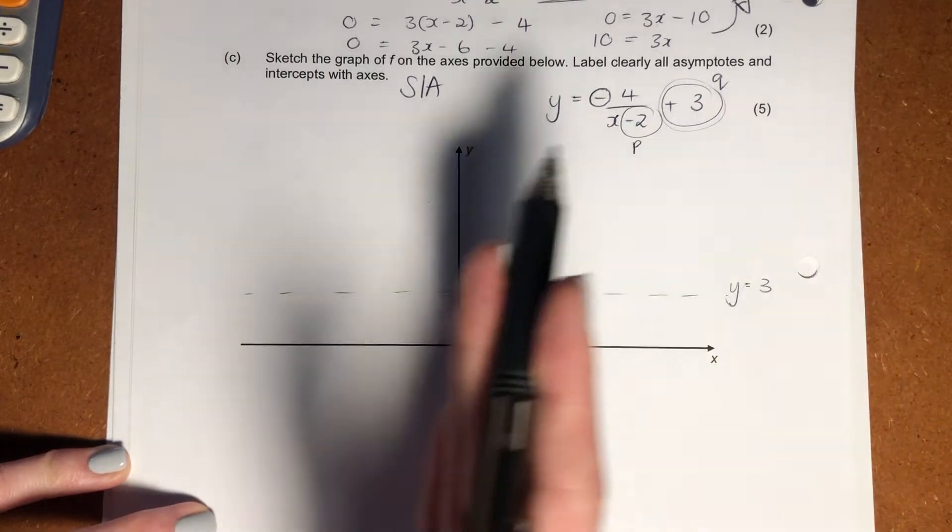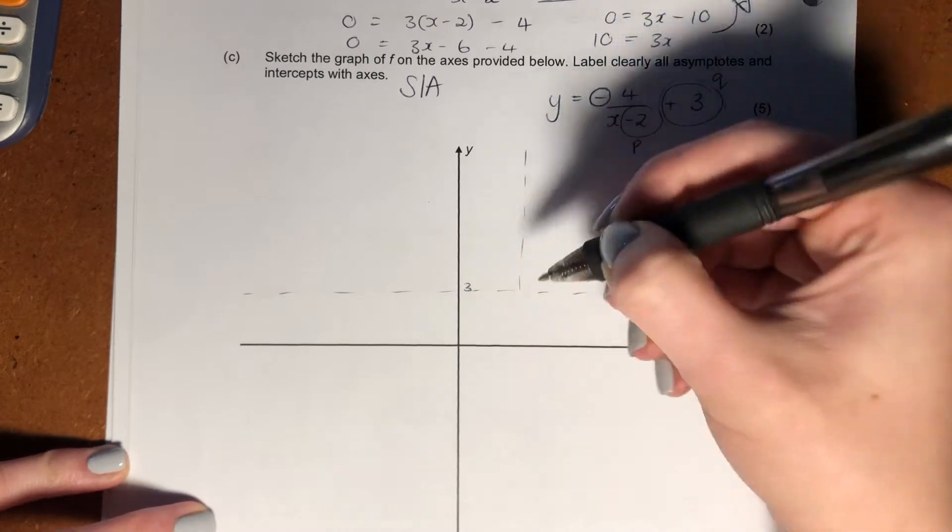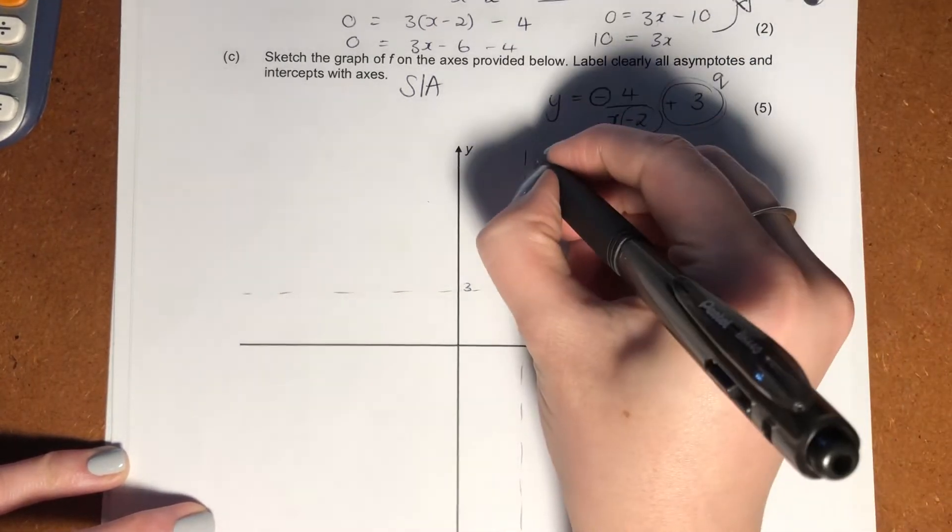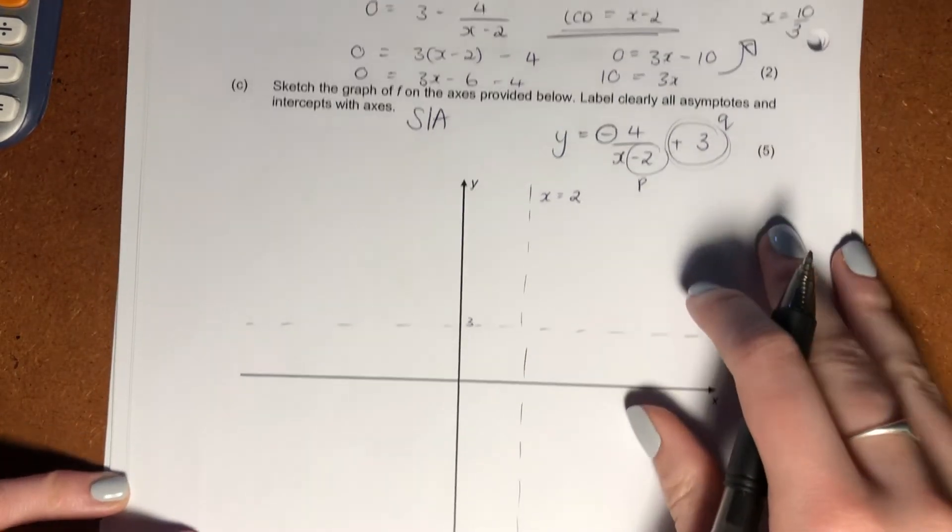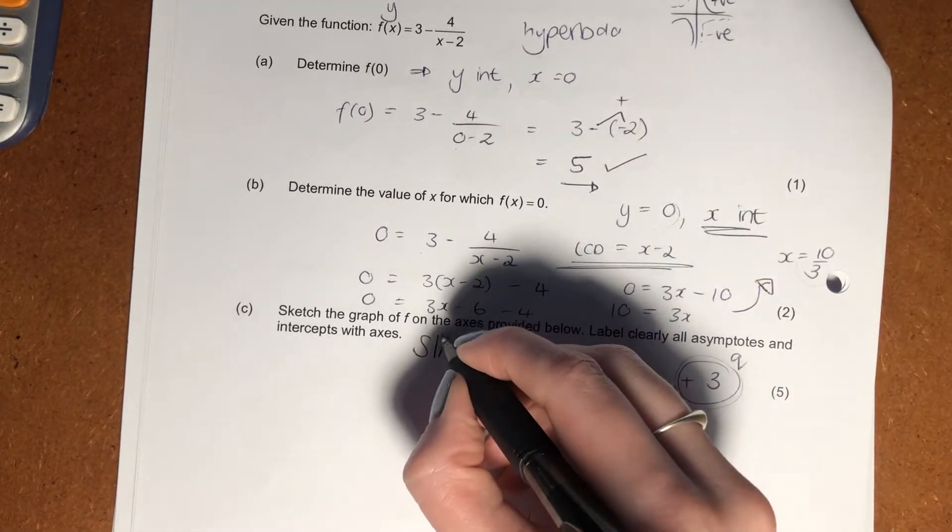A positive indicates a shift to the left. So over here, our asymptote is actually over here. And remember to label that. That is x equals 2. Second mark there. Then what do we have to put in? We've put our asymptotes now. Now we need to put in our intercepts.